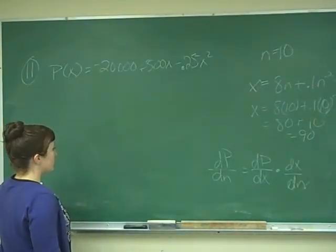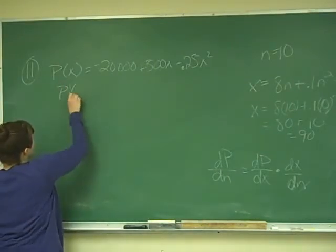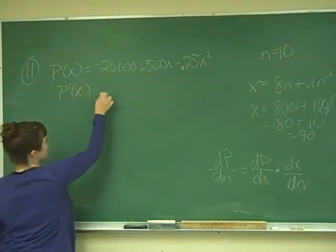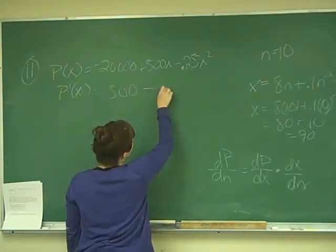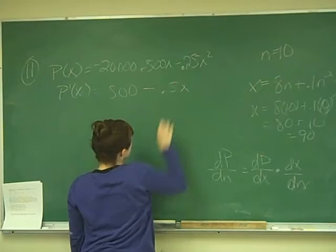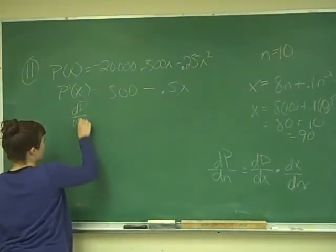We are going to first take the derivative of this. So p prime of x will be equal to 500 minus 0.5x. So this is, remember, this is dp over dx.